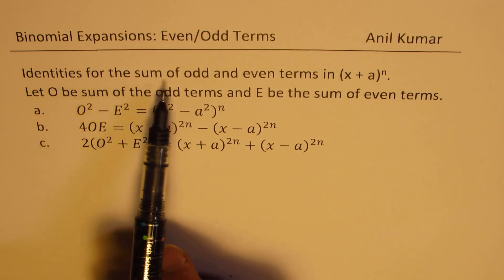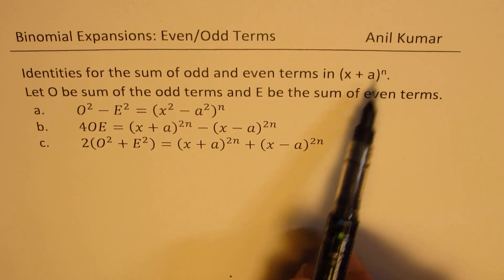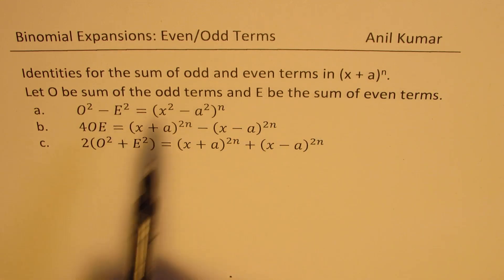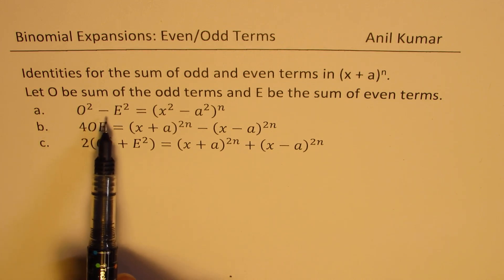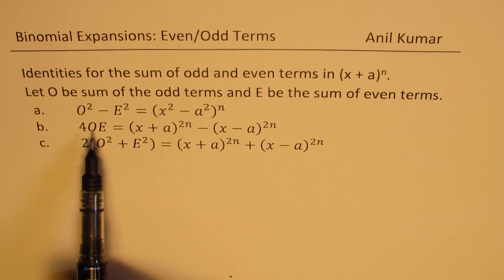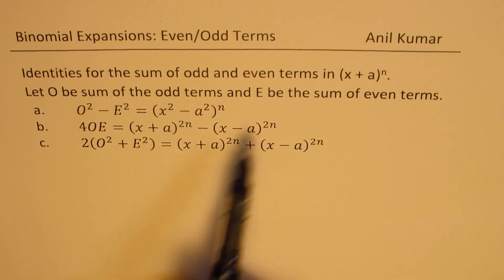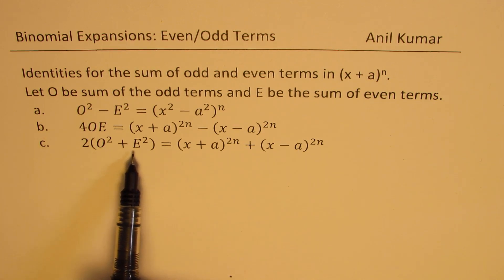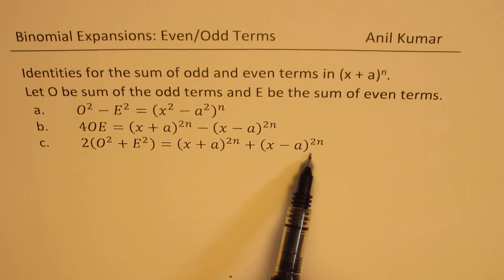Here are a few identities for the sum of odd and even terms in (x + a)^n. Let O be the sum of odd terms and E be the sum of even terms. The three identities are: O minus E equals (x² - a²)^n; four times OE equals (x+a)^(2n) minus (x-a)^(2n); and 2(O² + E²) equals (x+a)^(2n) plus (x-a)^(2n).